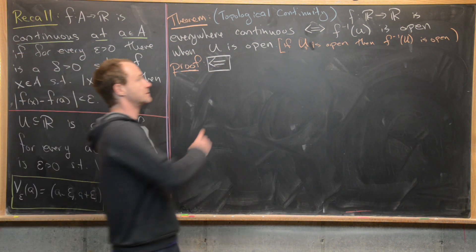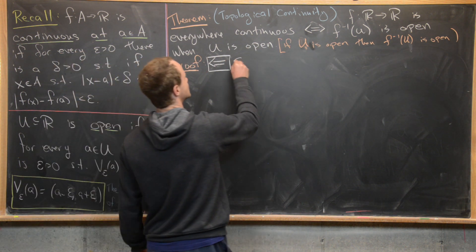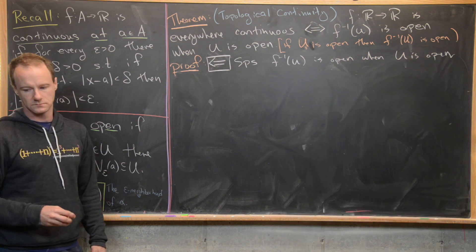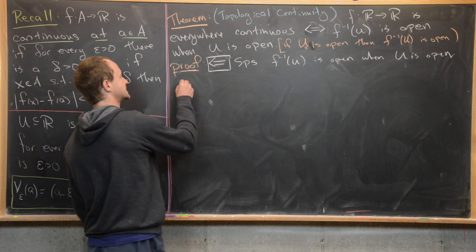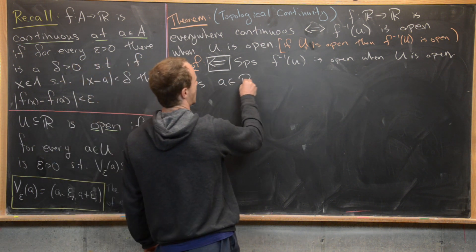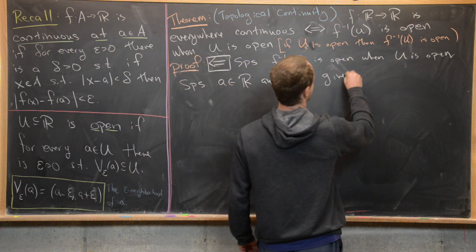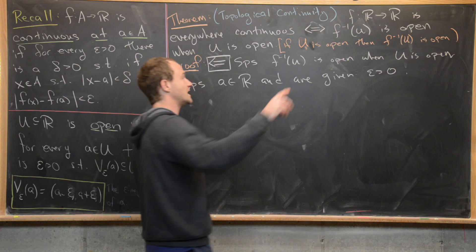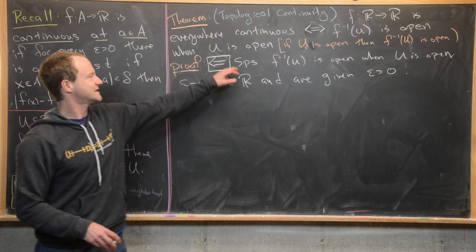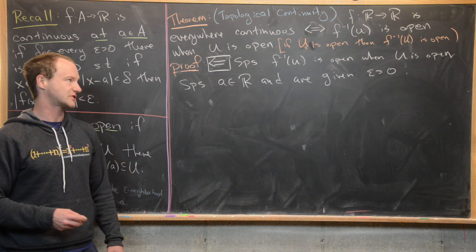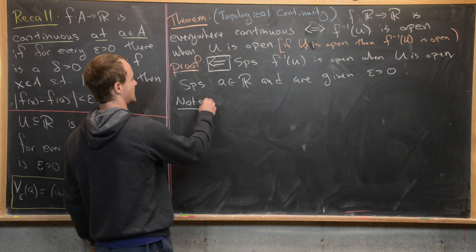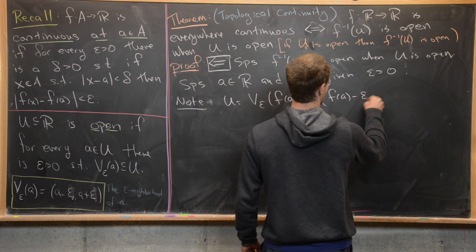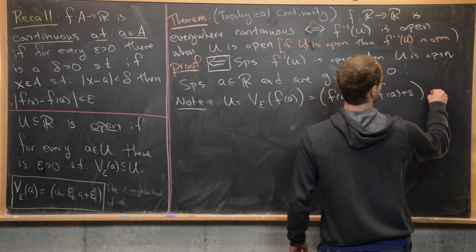Now we're ready for the reverse direction. We suppose that f inverse of U is open whenever U is open, and we want to conclude that f is everywhere continuous. Let a be in ℝ and let epsilon greater than zero be given; our goal is to construct an appropriate delta. We can leverage the hypothesis on a special open set U. Notice that if we set U equal to the epsilon neighborhood centered at f(a) — the open interval f(a) minus epsilon to f(a) plus epsilon — then U is open.